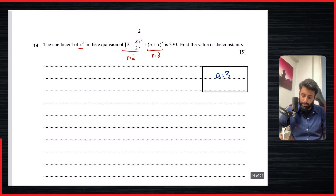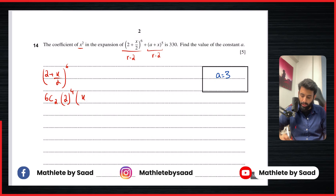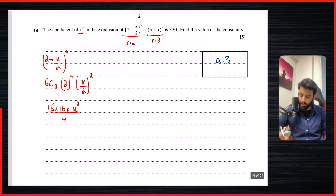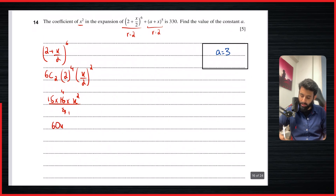For the first expansion (2 + x/2)^6 with r = 2: 6C2 · 2^4 · (x/2)^2. 6C2 = 15, 2^4 = 16, and (x/2)² = x²/4. So 15 × 16 × (1/4) = 15 × 4 = 60x².